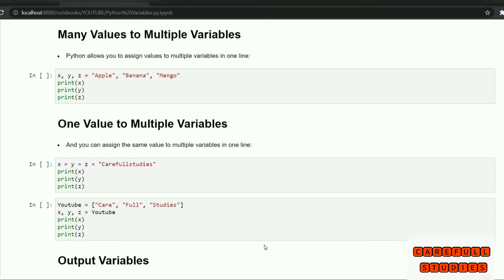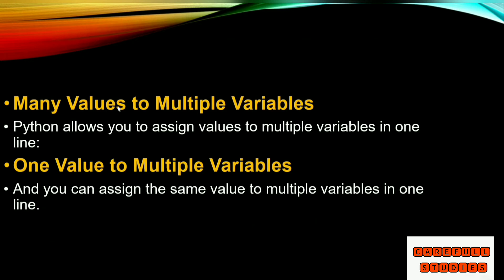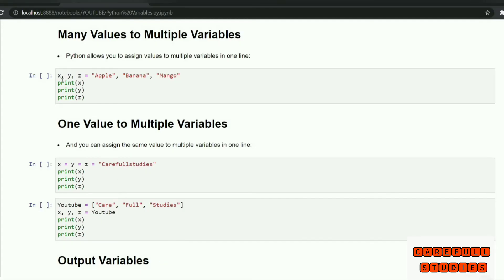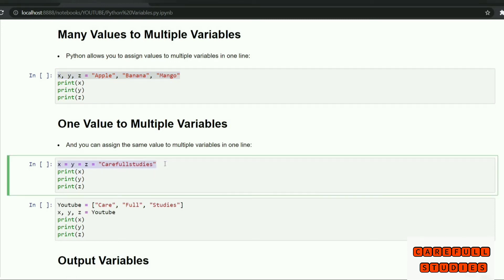Next, many values to multiple variables and one value to multiple variables. Python allows you to assign values to multiple variables in one line, and you can also assign the same value to multiple variables in one line — for example, x, y, z equal to one.